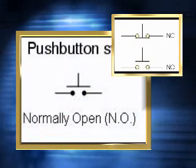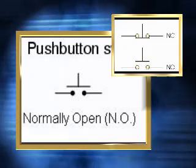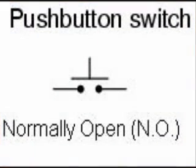This is the symbol of a push-button switch that is normally off or normally open, unless you press it. It must be pressed to close the contacts. Notice that the line is above the contact points and will be pressed down upon the contacts to close the break in the circuit.